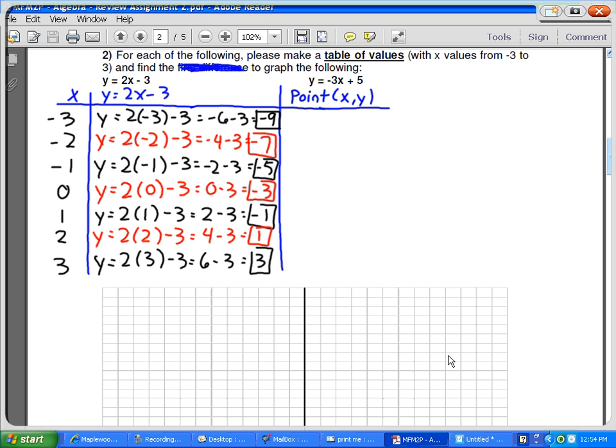As far as the x and the y points, all we're going to do is your x comes from the x column, and your y comes from whatever this is. So the first one's just going to be negative 3 and negative 9. Then negative 2 and negative 7, negative 1 and negative 5, 0 and negative 3, 1 and negative 1, 2 and 1, and 3 and 3.